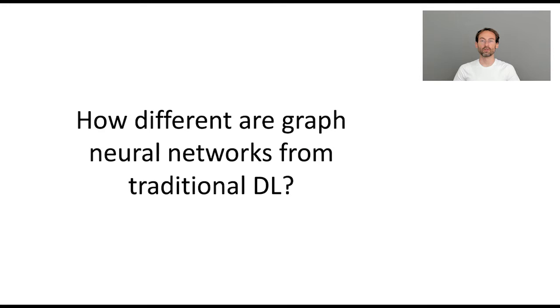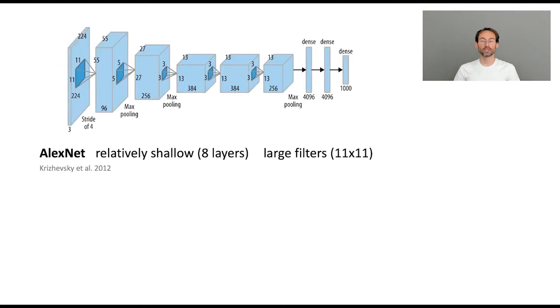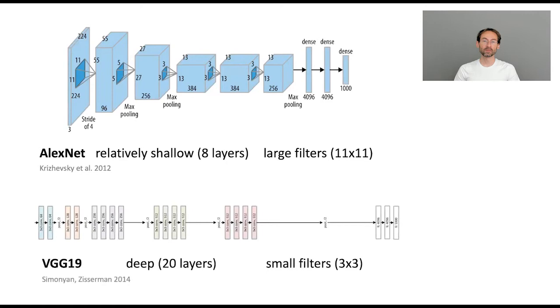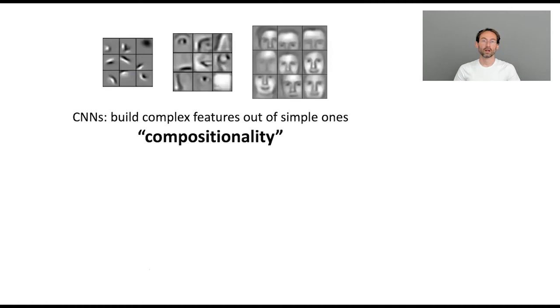Let's now look more into details of what is similar and what is different in graph neural networks compared to traditional deep-learning pipelines. If we look historically at the development of convolutional neural networks, we can see that early models such as AlexNet from 2012 were relatively shallow. In AlexNet, for example, we have eight layers and relatively large filters of up to 11 by 11 pixels. And as CNNs became more commonplace in computer vision, the community has chosen to go deeper and use smaller filters, as small as 3 by 3 pixels in this example of VGG architecture from 2014. And there are several reasons why this happened. First of all, obviously smaller filters are much more computationally efficient than bigger ones. But second, most importantly, it was shown that in convolutional neural networks, we can construct complex features from simple ones, a property that is called compositionality. And usually it's visualized by showing that in the early layers of the convolutional neural network, we see simple structures such as edges and corners. And as we go deeper, we see some more complex, elaborate features emerge.